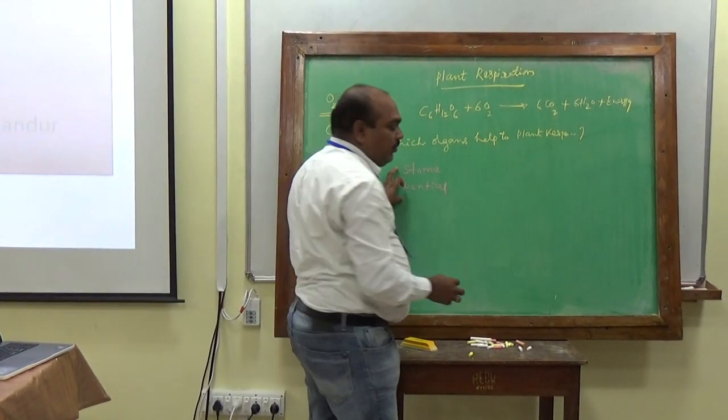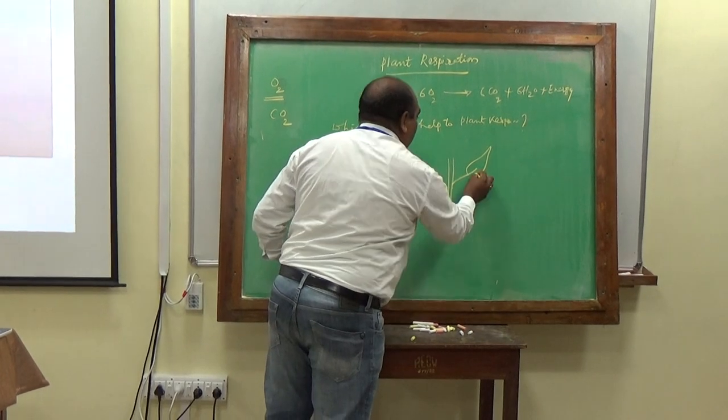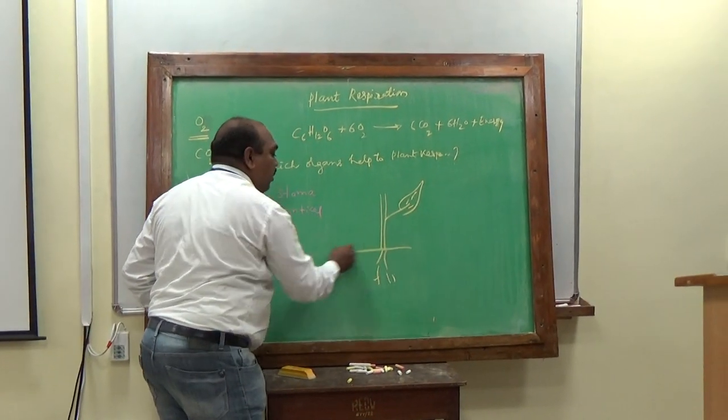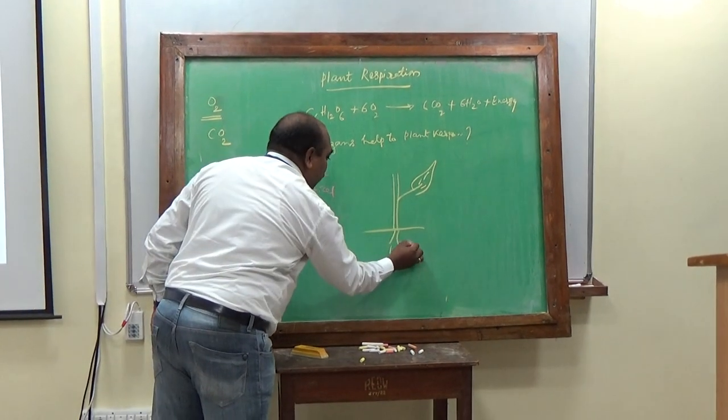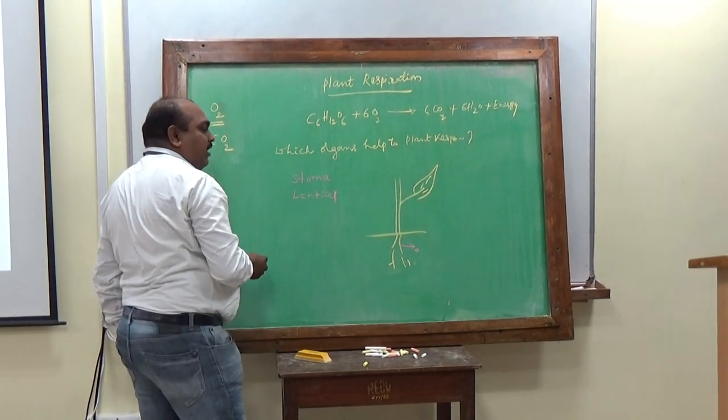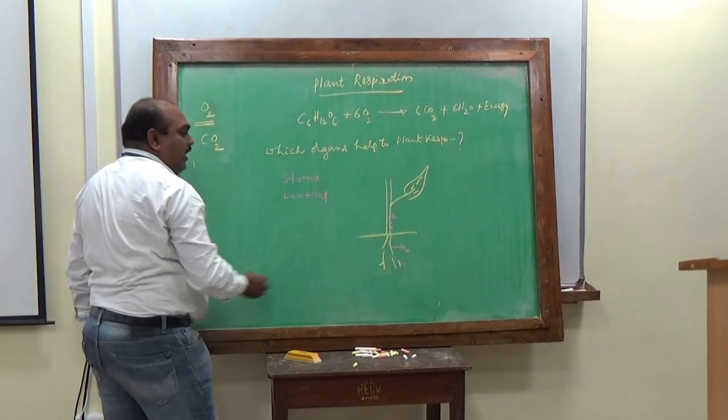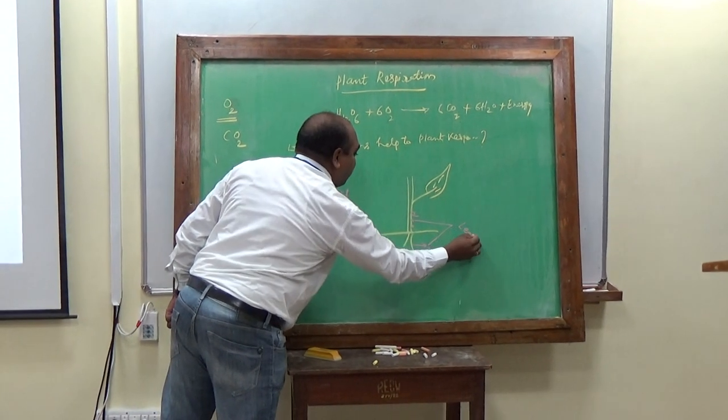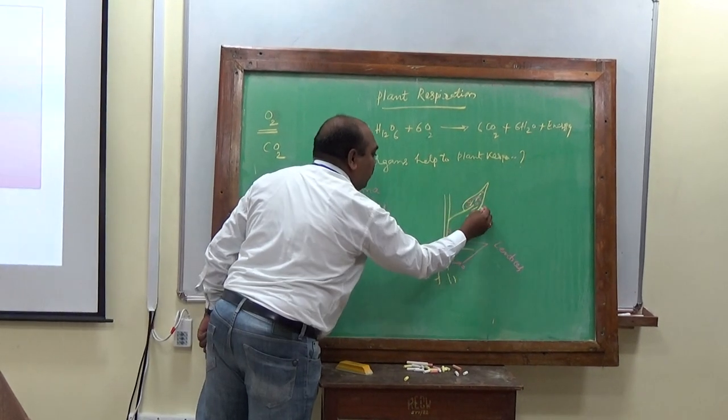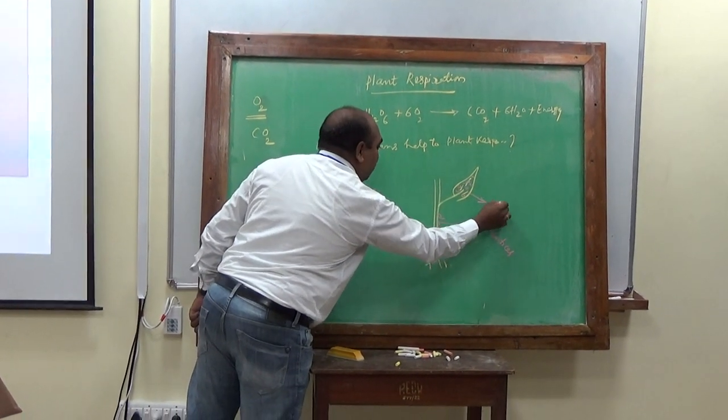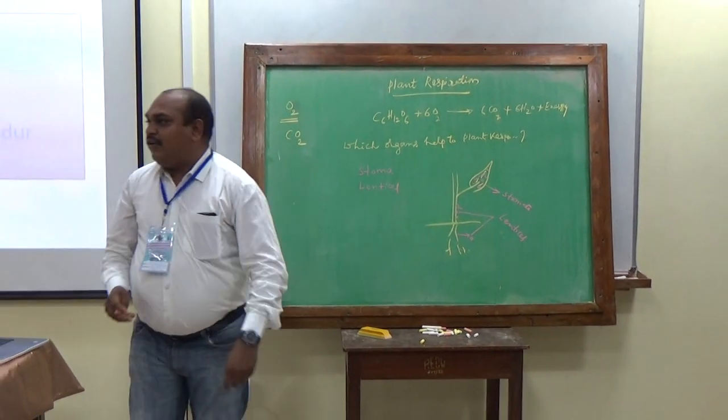Where they are located? If we are taking one plant, the plant has commonly roots, stem, leaves. The roots have small pores called root hairs. The woody part also has small pores. These are called lenticels. Then at the same time, many pores are located in the leaves. They are called stomata. Singular is called stoma. Plural is called stomata.